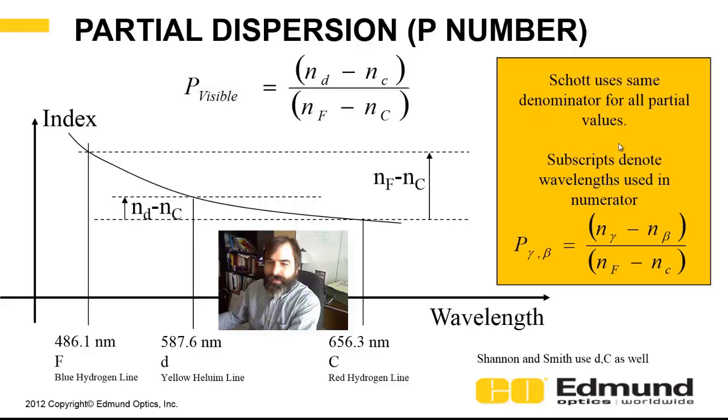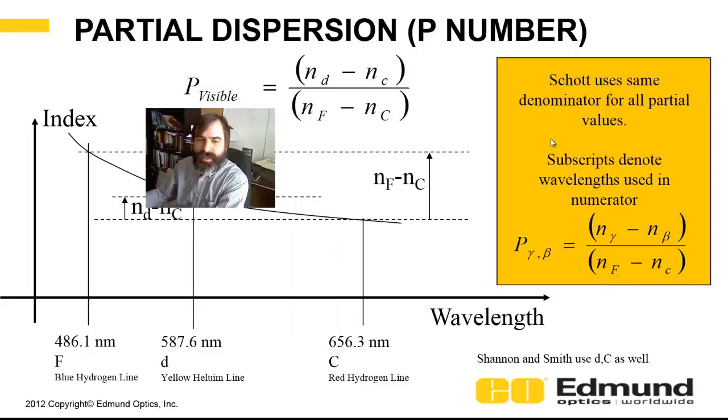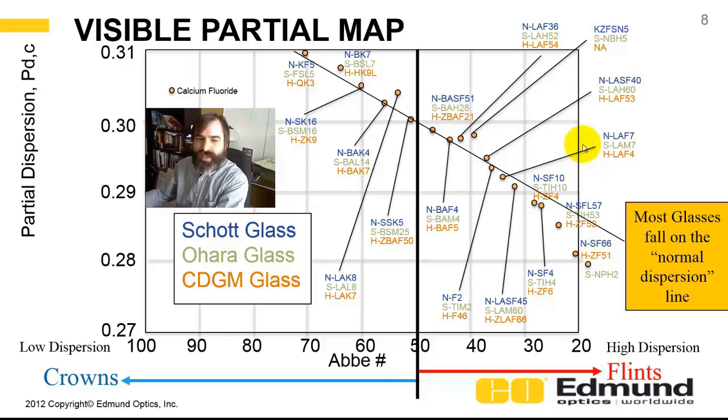Schott, in their catalog, their glass catalog, uses partial in terms of gamma and beta, and that's the wavelengths of the index in the numerator. In the denominator, they keep F and C constant. This theory was worked out by Schott and Abe back in the day.